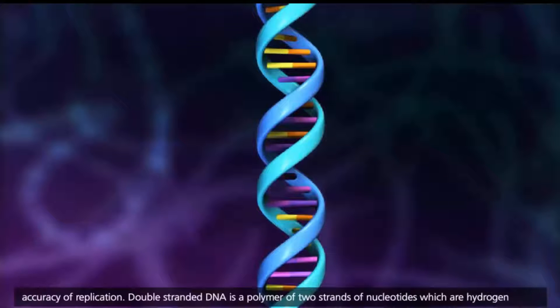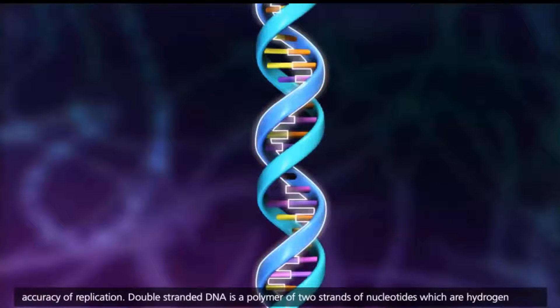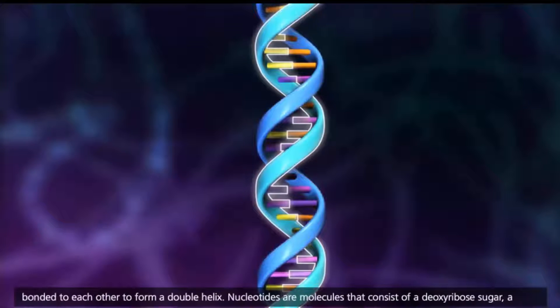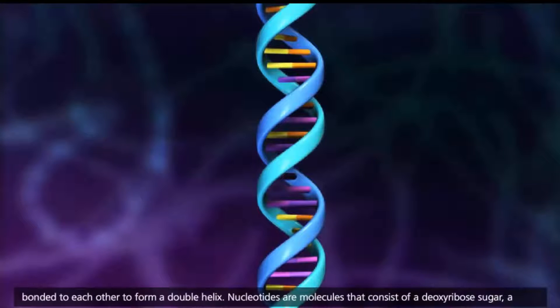Double-stranded DNA is a polymer of two strands of nucleotides which are hydrogen-bonded to each other to form a double helix.